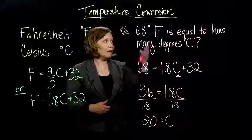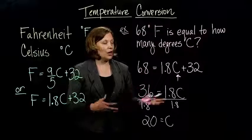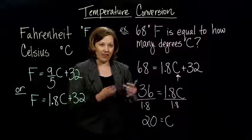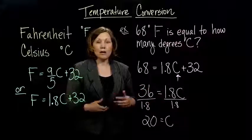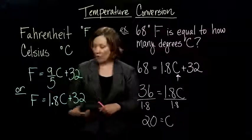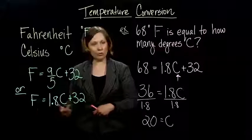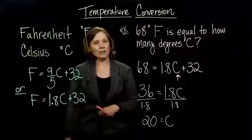If they give you the Fahrenheit temperature and ask you for the Celsius temperature, you have to do a little bit more work, right? You end up with the equation you have to solve. But either way, not too bad. You know how to do all these things. So, it should be pretty straightforward as long as you remember, Fahrenheit temperature is equal to 1.8 times the Celsius temperature plus 32.